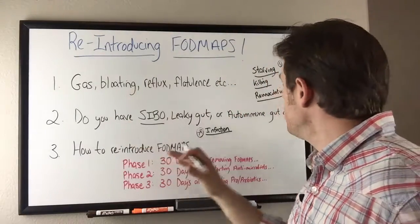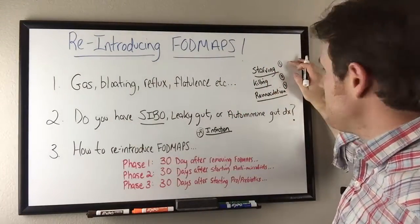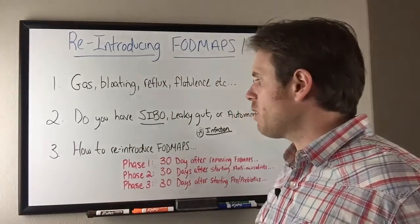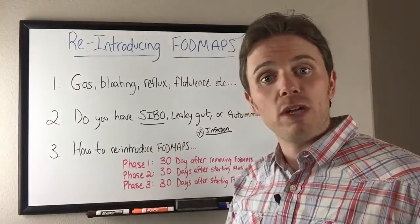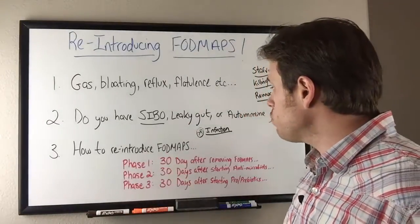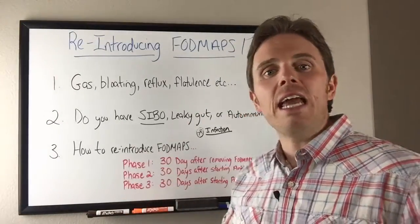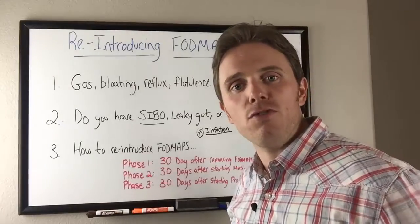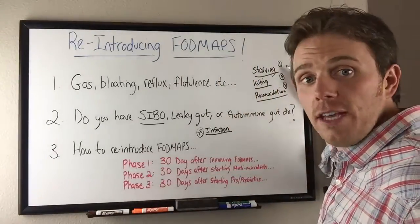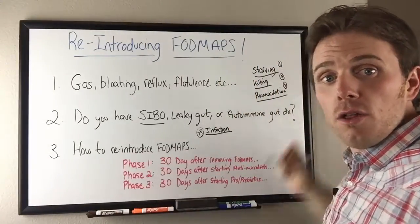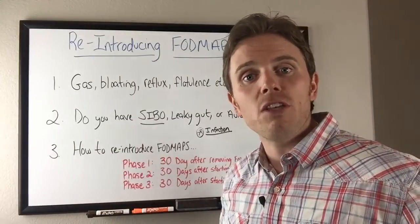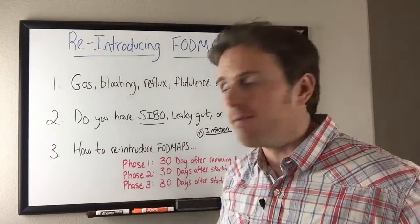People that have a lot of these symptoms will still feel better by cutting out FODMAPs and potentially adding in some enzymes and hydrochloric acid as well. So again, three phases: starving, killing, and re-inoculation. Let's talk about how we're going to actually reintroduce some of these FODMAPs.